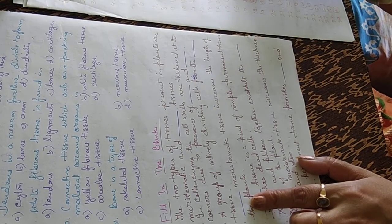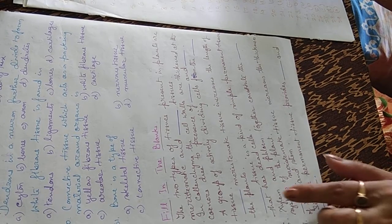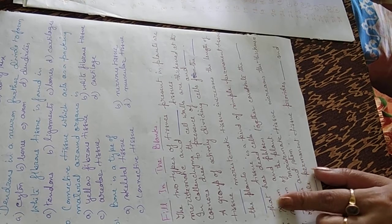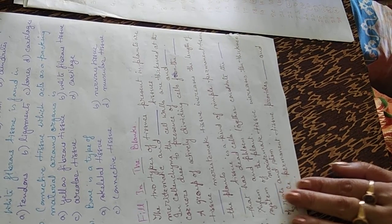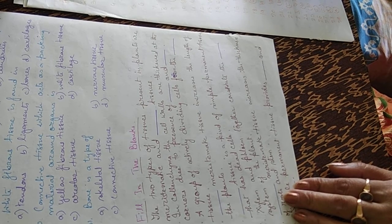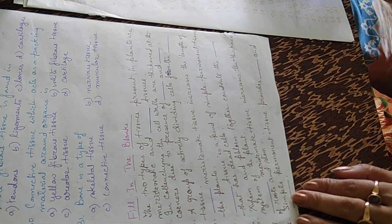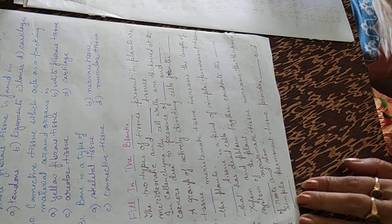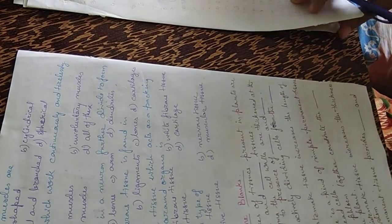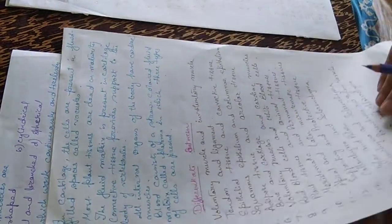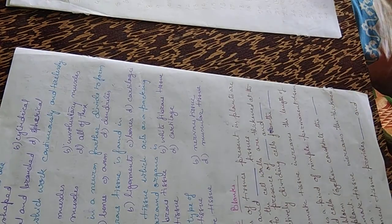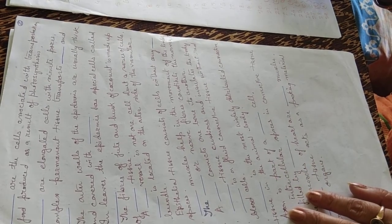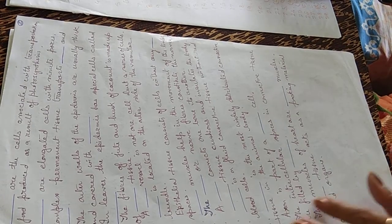The apical meristematic tissue increases the length of the plants. Sclerenchyma tissue is the kind of simple permanent tissue that has dead cells. Xylem and phloem together constitute the vascular system of the plant. Sieve cells are the cells associated with the transportation of food produced as a result of photosynthesis.